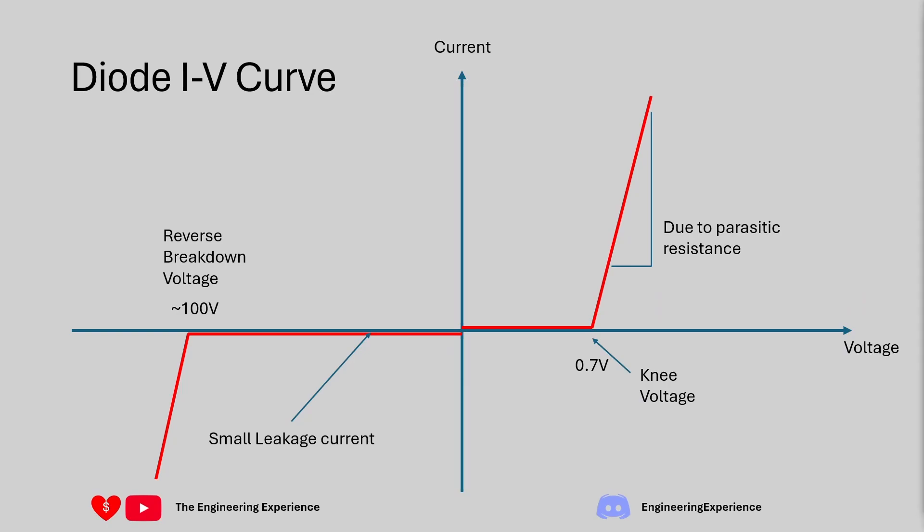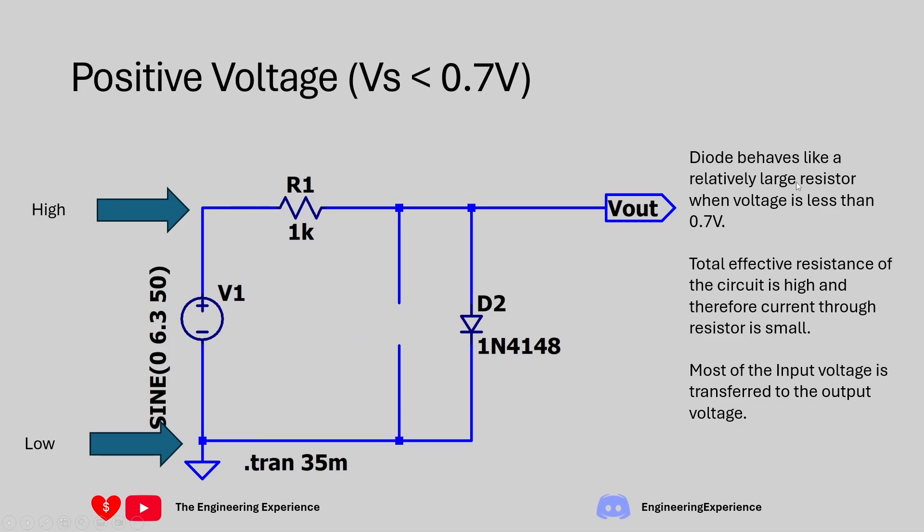So now let's move on to the question itself. I've broken it down into four slides which will make it easier to analyze. So let's look at when the positive voltage is applied but the voltage itself is less than 0.7 volts. In this case you have a positive voltage here so let's say it's 0.6 volts.